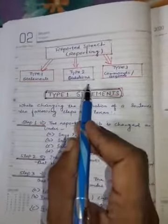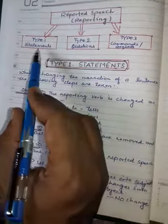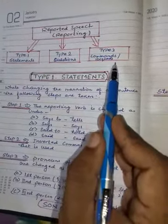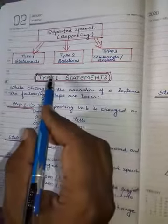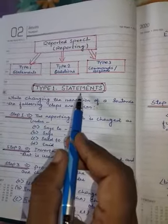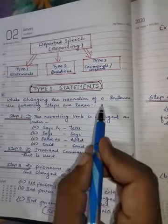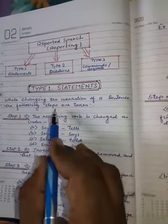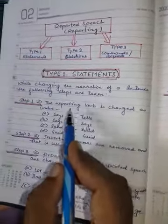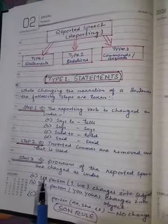Now, as I mentioned earlier, you need to know about Statements, Questions, and Commands and Requests. But first, today I am going to teach you about the Statement — that is, the assertive sentence. While changing the narration of a sentence, the following steps are taken. When we make an assertive sentence, there will be six steps. It is very simple and easy.